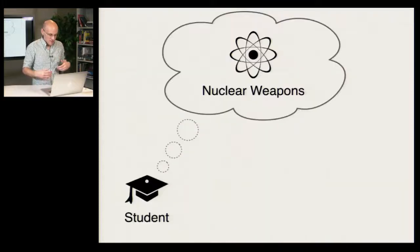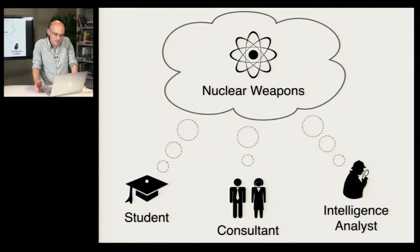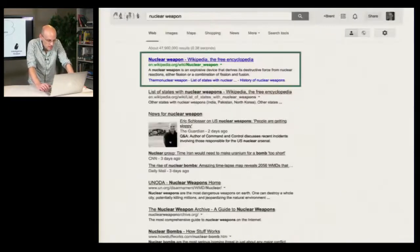But what happens if you are a student who's been given the task of writing a detailed report on nuclear weapons, or perhaps more consequentially, you're a consultant or an intelligence analyst who's been asked to do the same thing? Well, in this case, Google basically is just going to point you to the nuclear weapons page on Wikipedia, and you're going to have to do the rest of the work yourself.